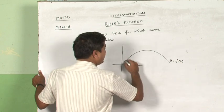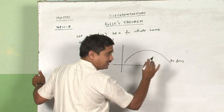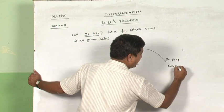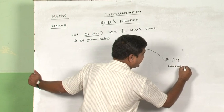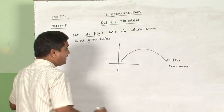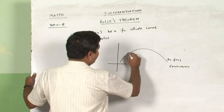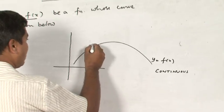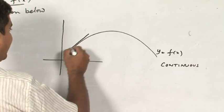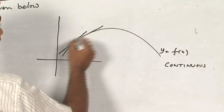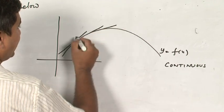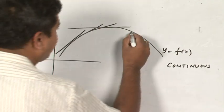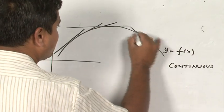There is no breakage in this particular function — that means this function is absolutely continuous. Second, this function can have a derivative, meaning you can draw a tangent at every point of this particular curve. This is how I am constructing the tangents to the curve.